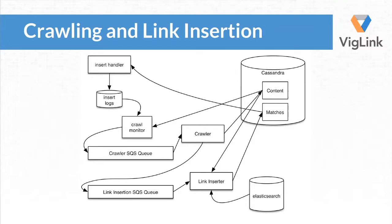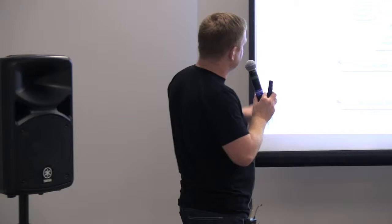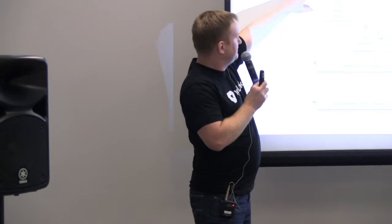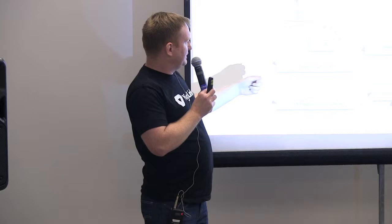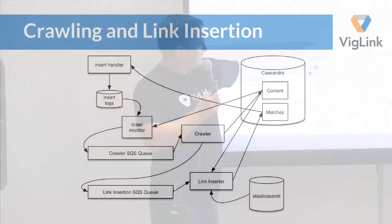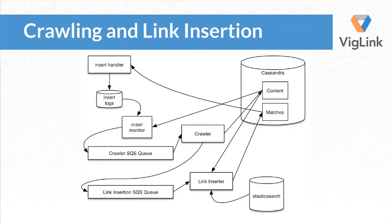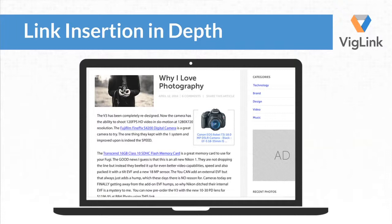The last slide here is a high-level schematic of the link insertion pipeline — Katrina's going to go into that in much more detail. At the end of the day, we're receiving insert calls from publisher pages. We've got a monitor watching the logs, making sure the content is either not too old or stale, or if it's never been seen before, we insert a request to crawl the content into an SQS queue that triggers a crawl. After the crawl, we run the link insertion pipeline, which brings the page content together with all the offers in Elasticsearch and produces a set of matches. Those matches are then available to subsequent insert calls for that page.